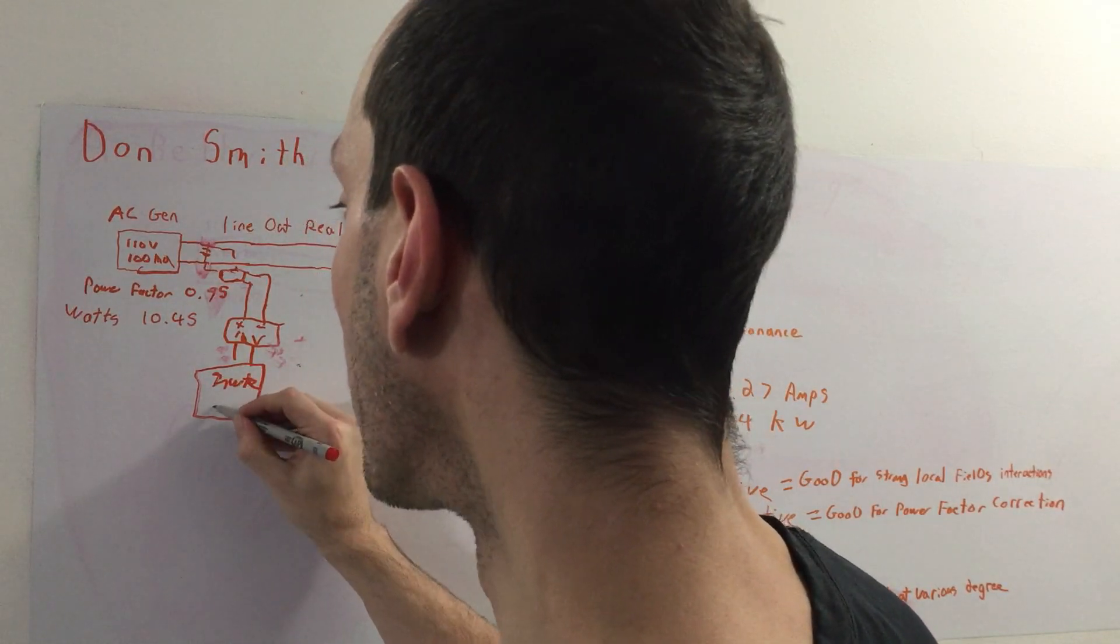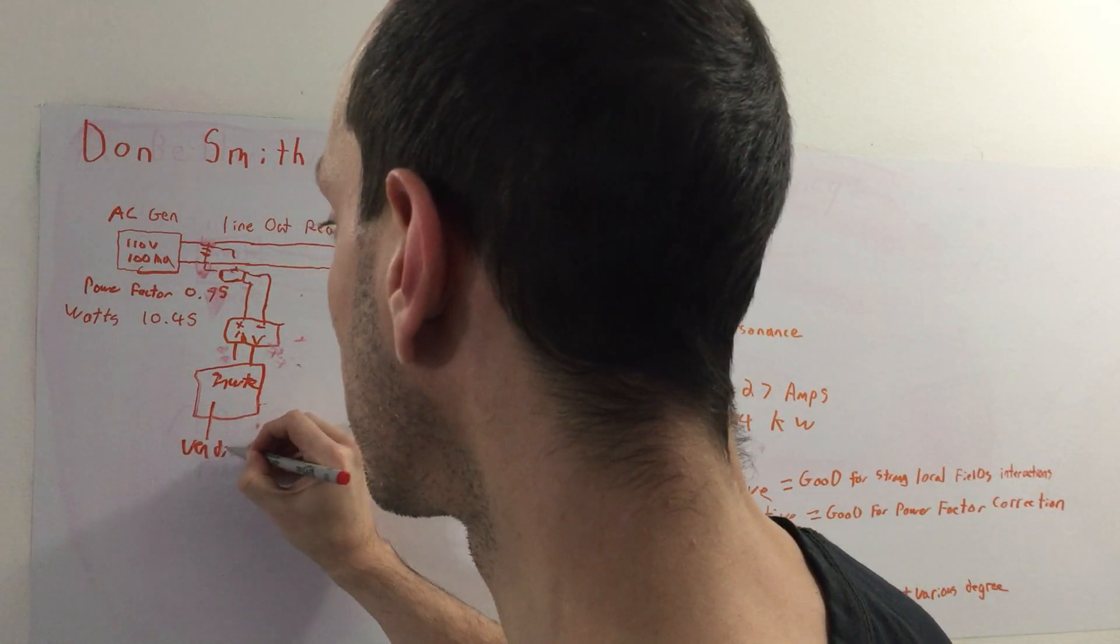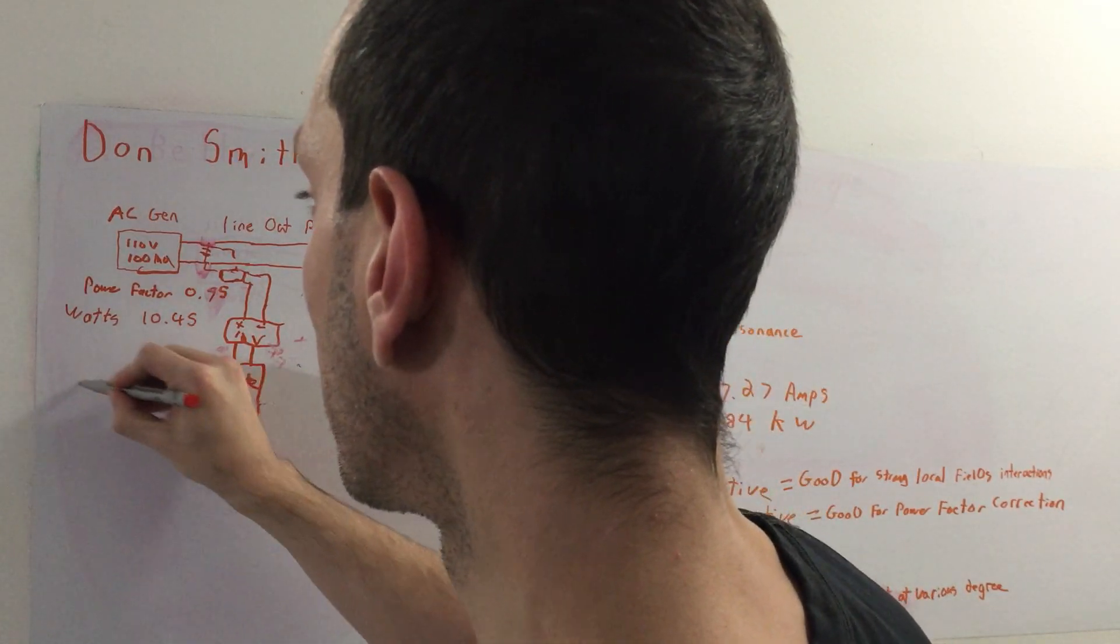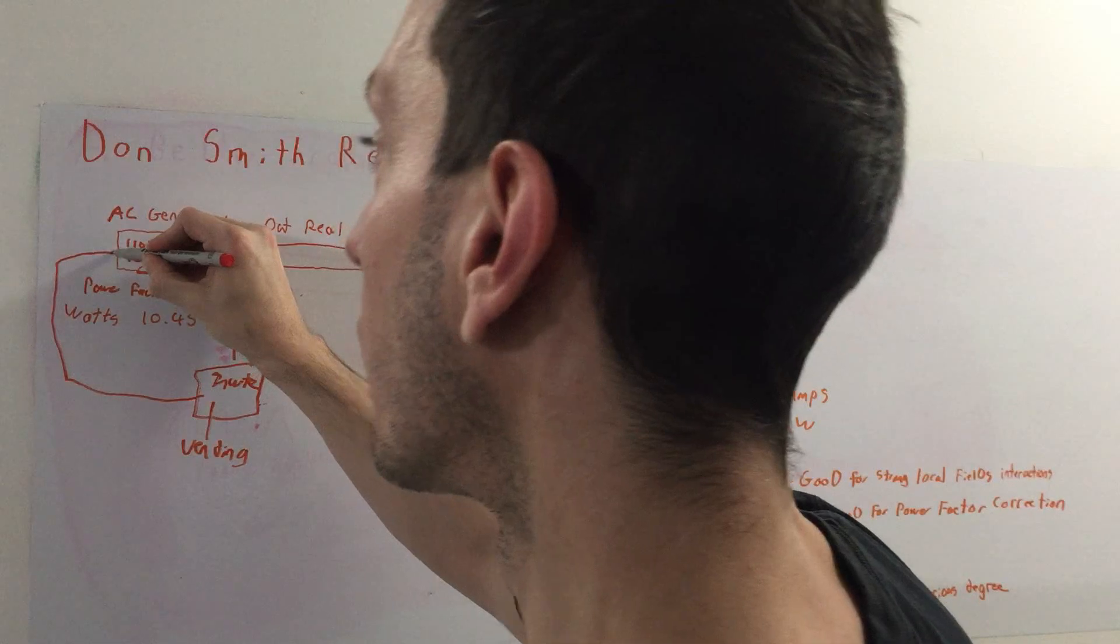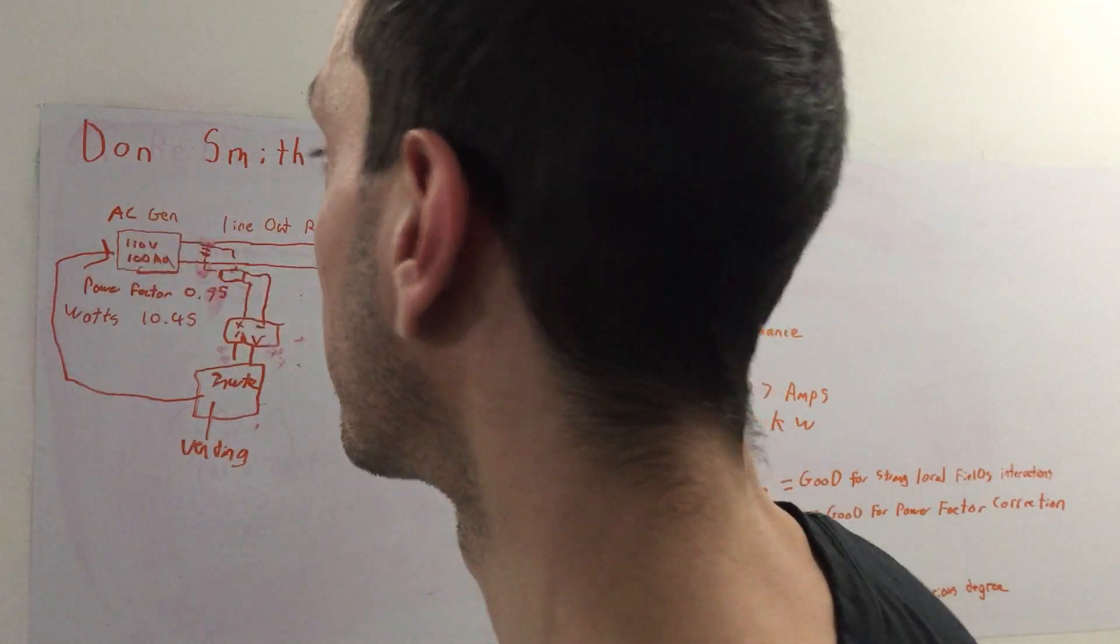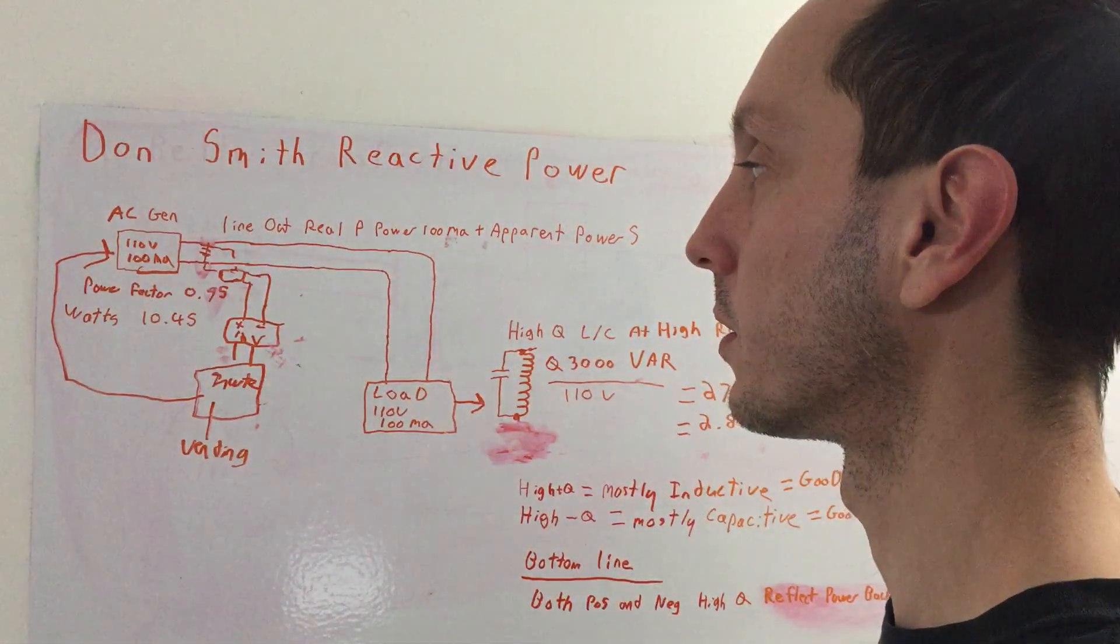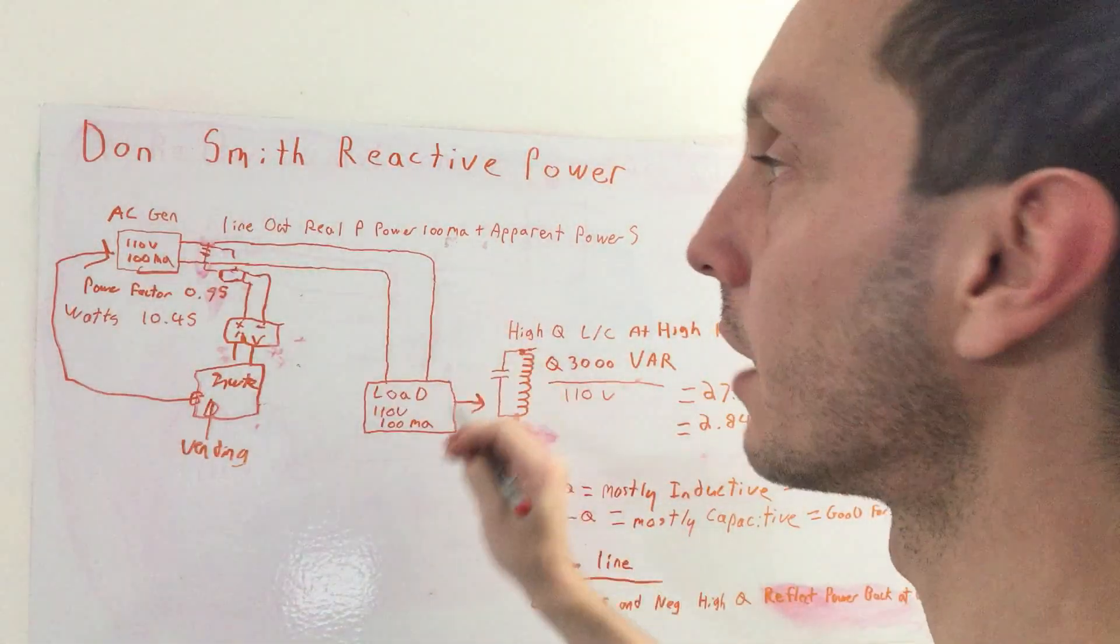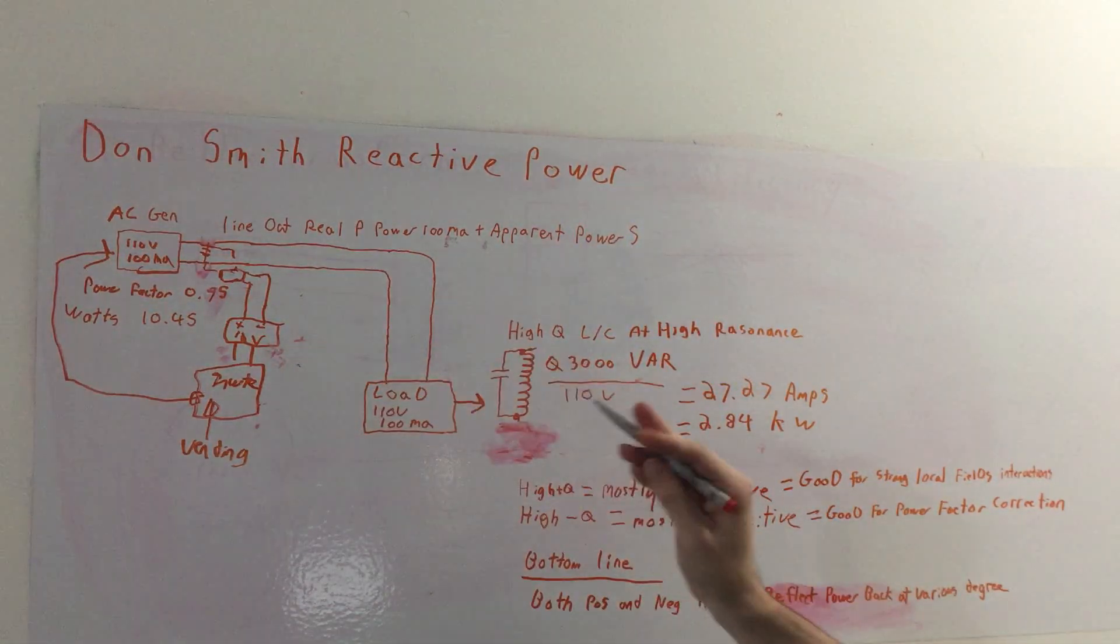So essentially what you have here is you then put your inverter, regular inverter here, and then you run your vending machine off of it, and then you run your generator, your oscillator, whatever on there. So the two outputs from your inverter, and then you essentially have a self-loop and setup here.